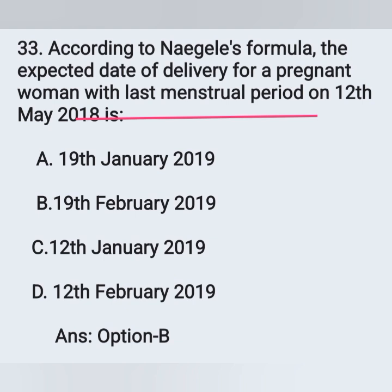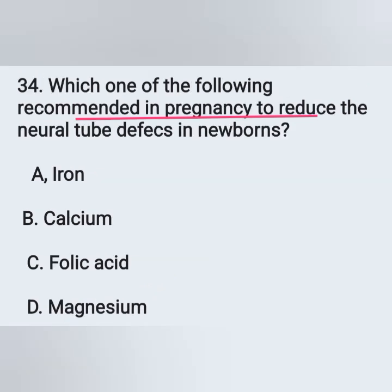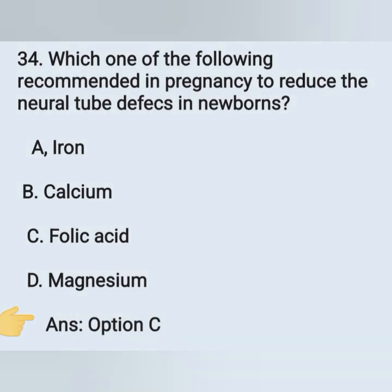Question 34: Which of the following is recommended in pregnancy to reduce neural tube defects in newborns? Options: option A, iron; option B, calcium; option C, folic acid; option D, magnesium. To reduce neural tube defects in newborns, we give folic acid. Option C is the correct answer.